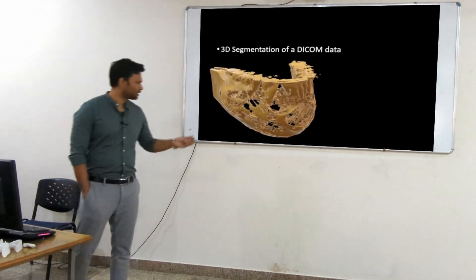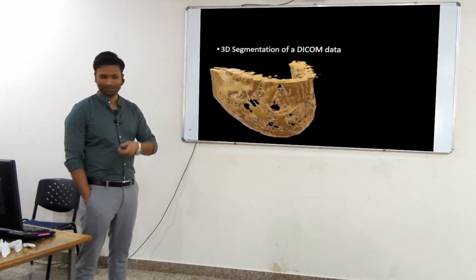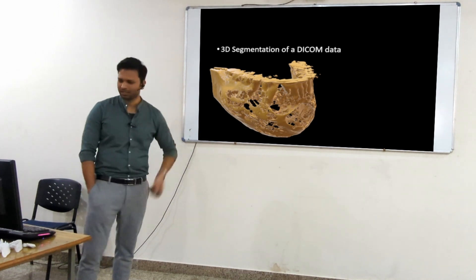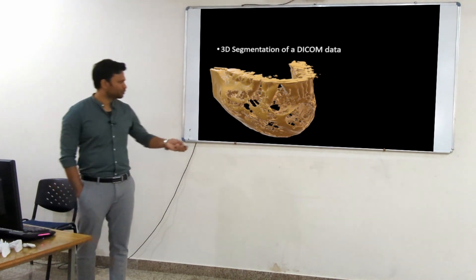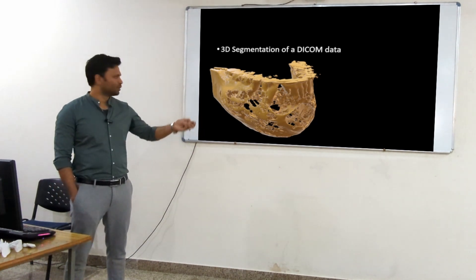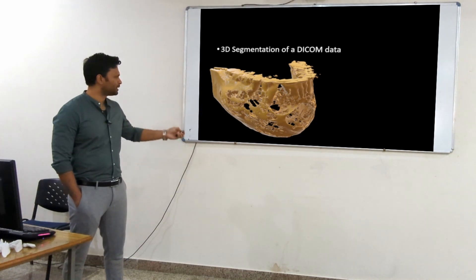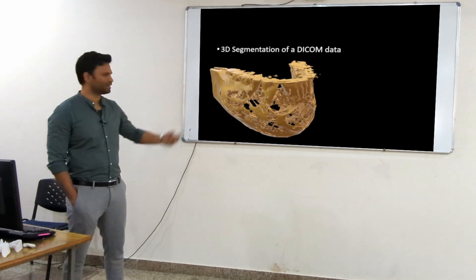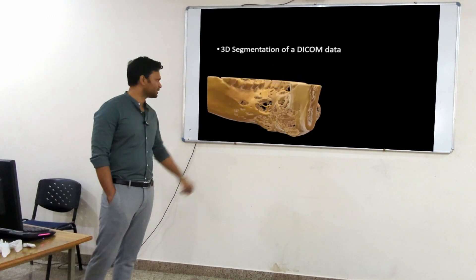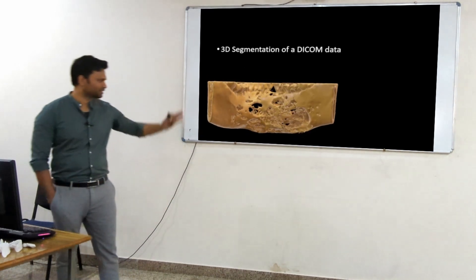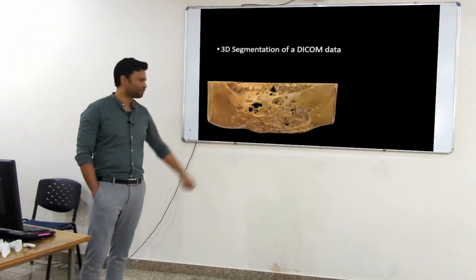This is a case of ossifying fibroma. One of my PGs presented this way during our interdepartmental meet. If you show this to a BDS, this is the mandible, the lower jaw, and the extent. If we rotate this, you can see the lingual view, posterior view.